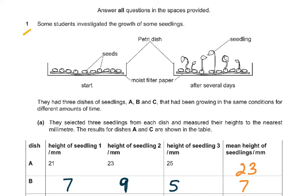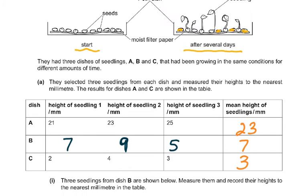Question 1: some students investigated the growth of some seedlings. All questions have to be answered, so there's no choice in this paper. There was a Petri dish, there's a moist filter paper, there's seeds on it, and with the start of the experiment, and then after several days you can see they've grown and they're a little taller. They had three dishes of seedlings A, B, and C that had been growing in the same conditions for different amounts of time. The results of dishes A and C are shown in the table.